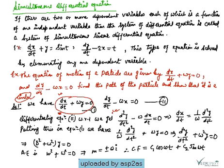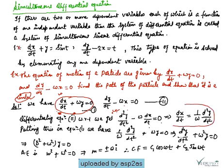We can either obtain dy/dt from equation one and substitute into equation two, or we differentiate equation two with respect to t: d²y/dt² - ω(dx/dt) = 0. From this, dx/dt = (1/ω)(d²y/dt²). Now we put this value into equation one.